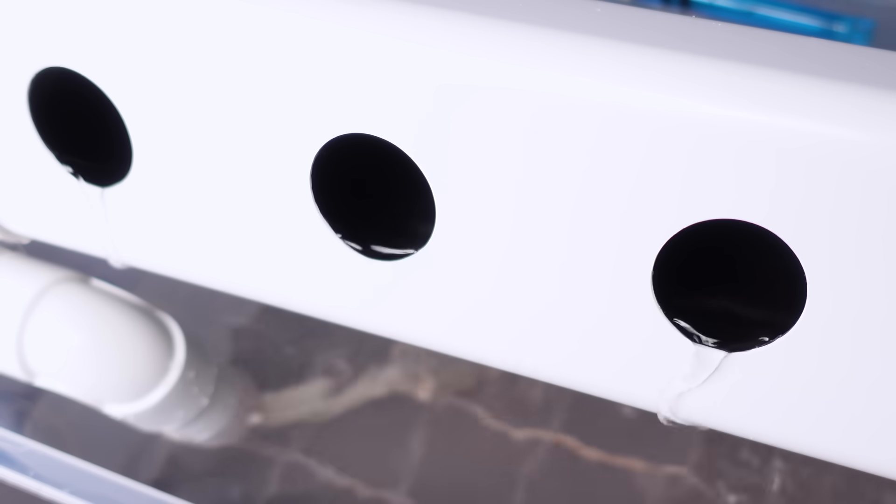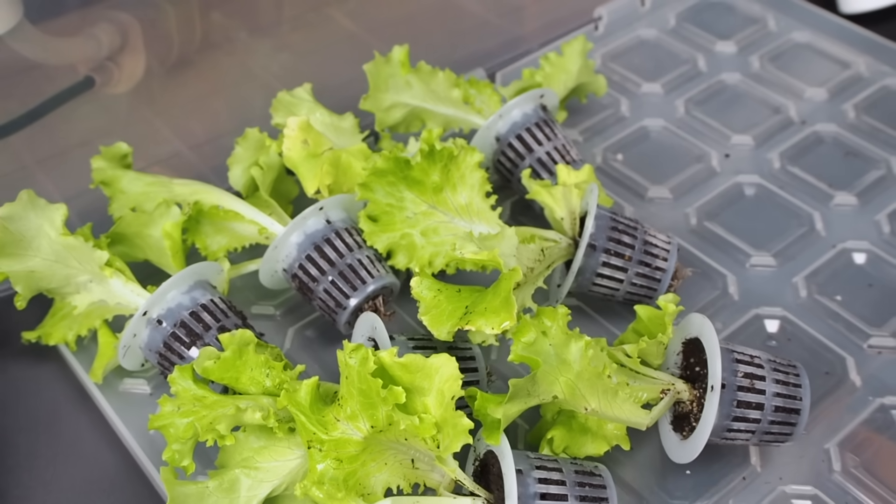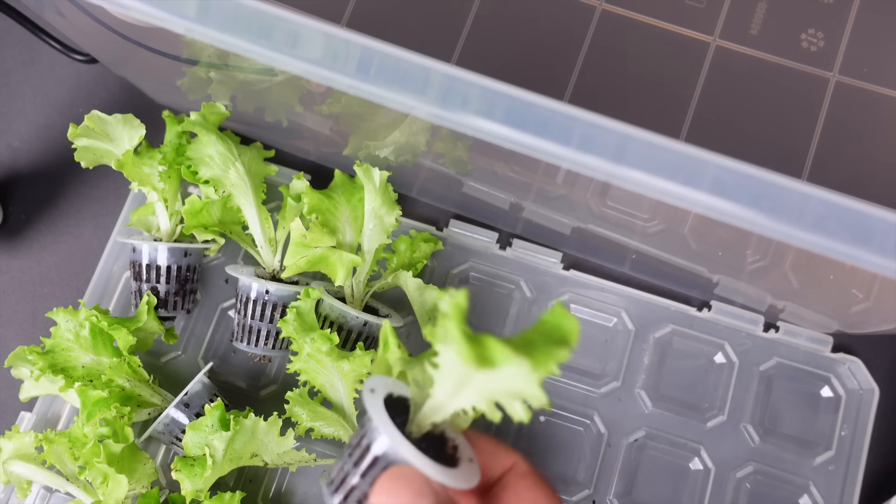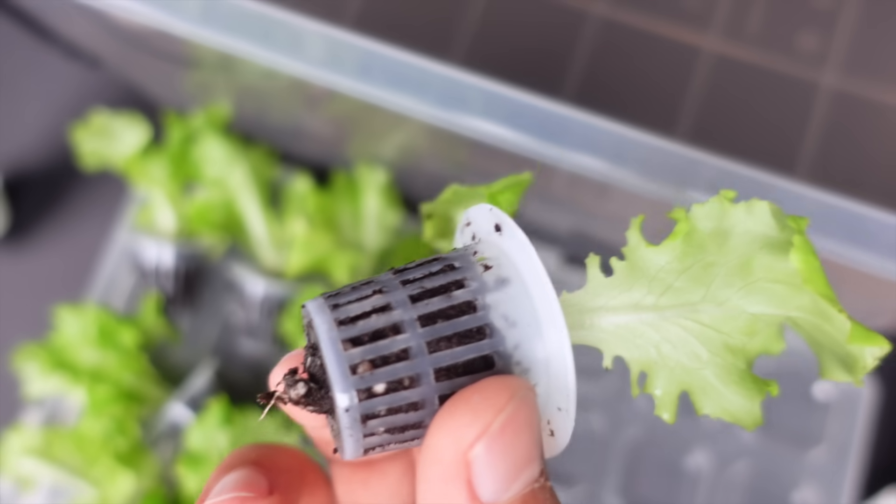The system is installed, and now the plant seedlings can be placed in the system. In about 15 to 20 days, the plants have reached this size. Temperature, lighting, and adequate watering are the factors that make the plants grow fast.